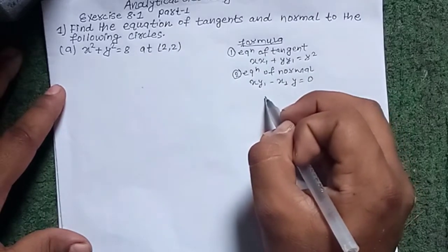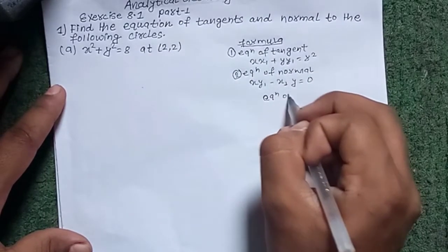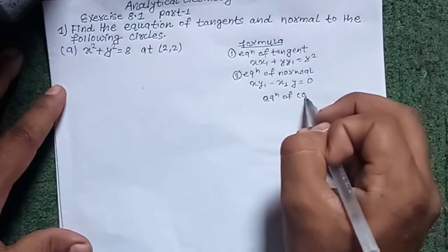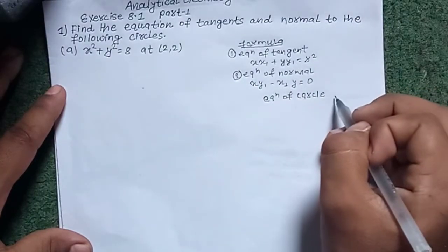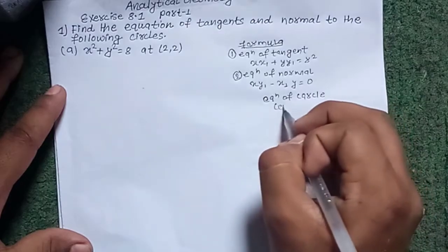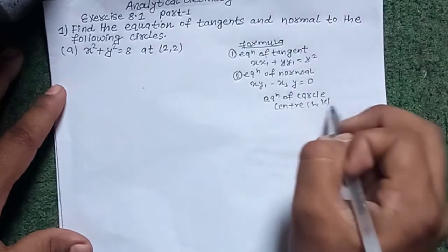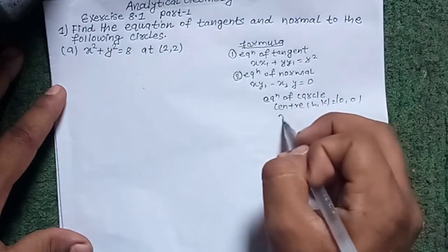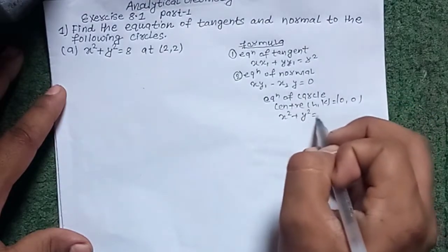Also note down the equation of the circle formula. When the center is at (0,0), we use the formula x² + y² = r².